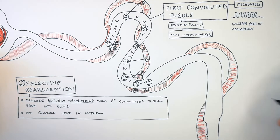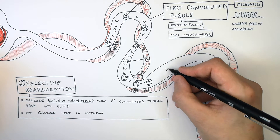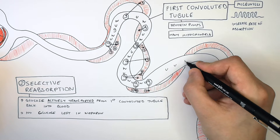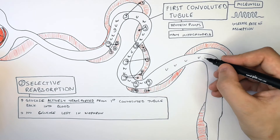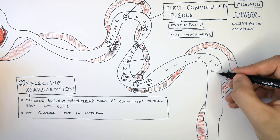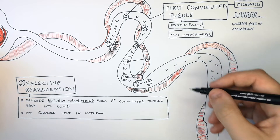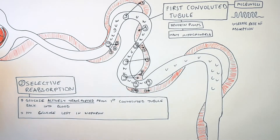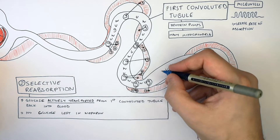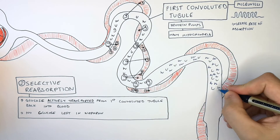The filtrate leaving the first convoluted tubule into the loop of Henle should contain no glucose, as all the glucose should have been actively transported out. All that should be left is water and urea.